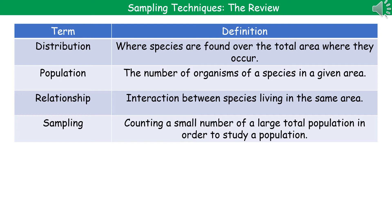First thing we need to know are four key words and their meanings. Distribution is where species are found over the total area where they occur. Population is the number of organisms of a species in a given area. A relationship is the interaction between species living in the same area. And sampling is where we count a small number of a larger total population in order to carry out a study on it.